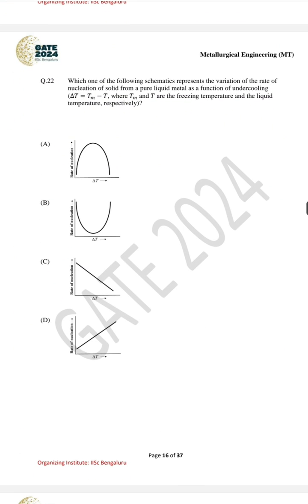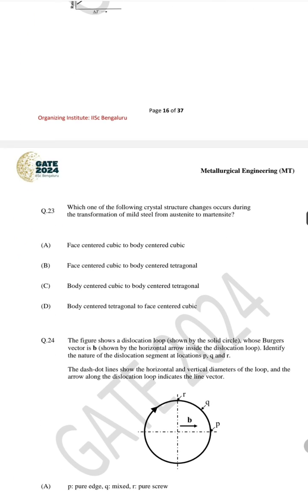For question number 22, where you have to identify the rate of nucleation versus undercooling, the correct answer is A. For question number 23, which crystal structure change occurs during transformation of mild steel from austenite to martensite — austenite is FCC and martensite is BCT — the correct answer is B.